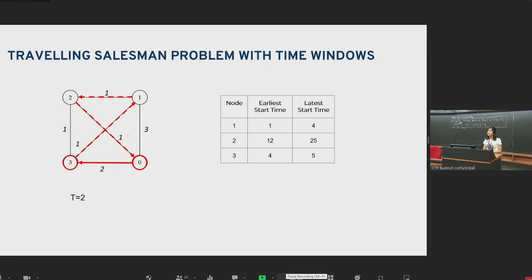Now let's trace this. At time equals zero, we are at node zero. Then at time equals two, we are at node three. If you check node three, the earliest start time is four. This means you need to wait. So we wait until T equals four. Then at time equals five, we are at node one. But now let's check the latest start time for node one. It is four, but now T is five. This means this route is not a feasible one.